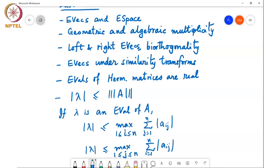So the mod row sums or the mod column sums, if you take the largest of them, they will always be an upper bound on the modulus of any eigenvalue of the matrix. Why is this true?